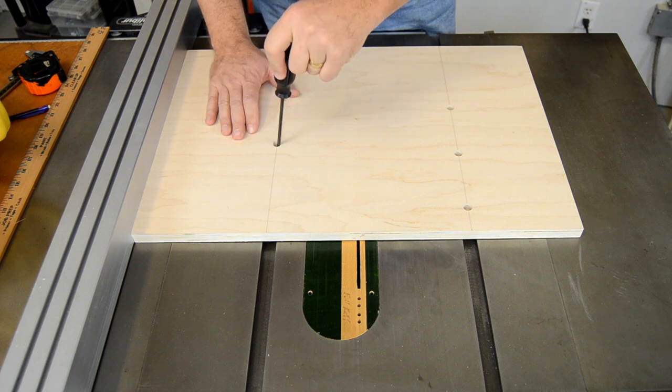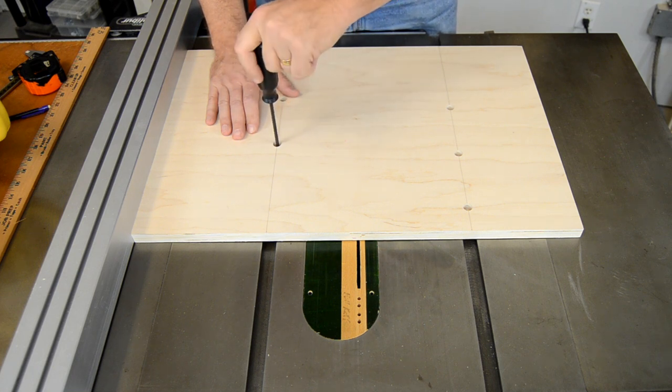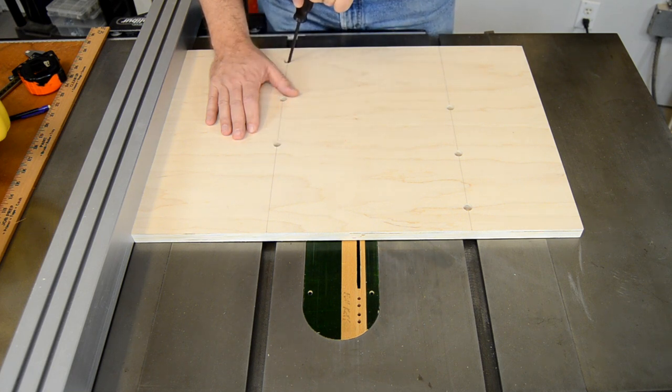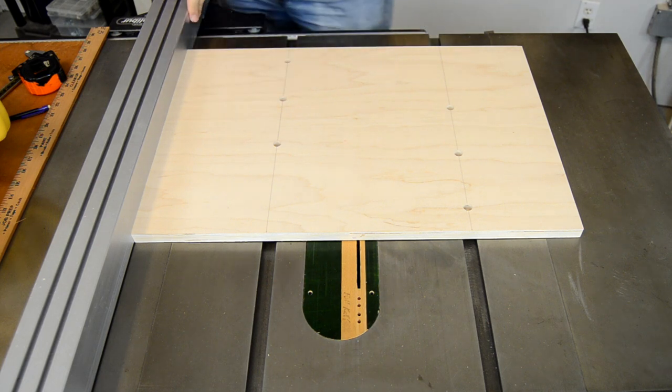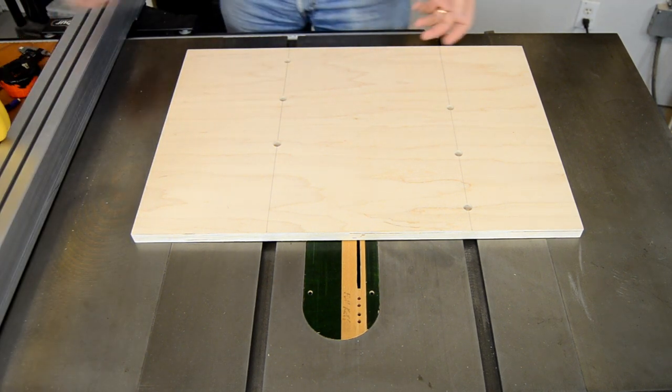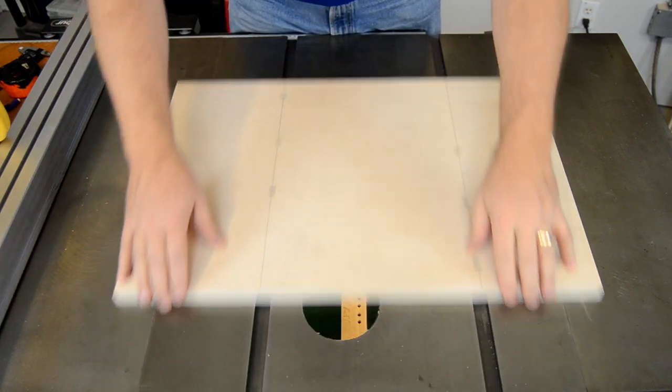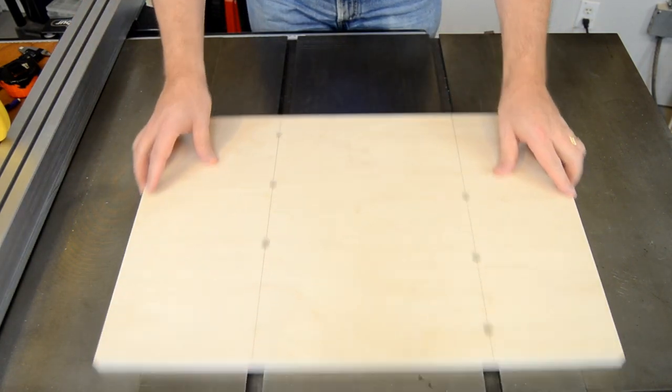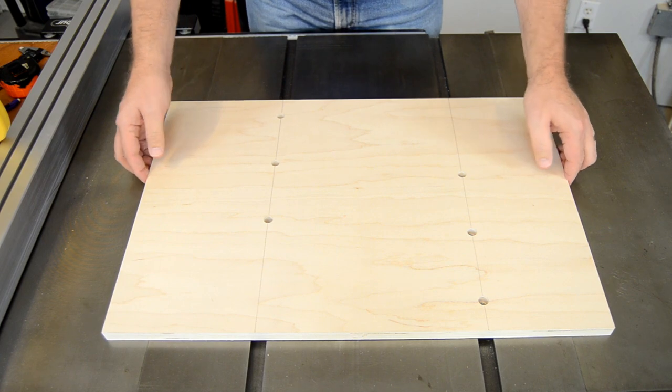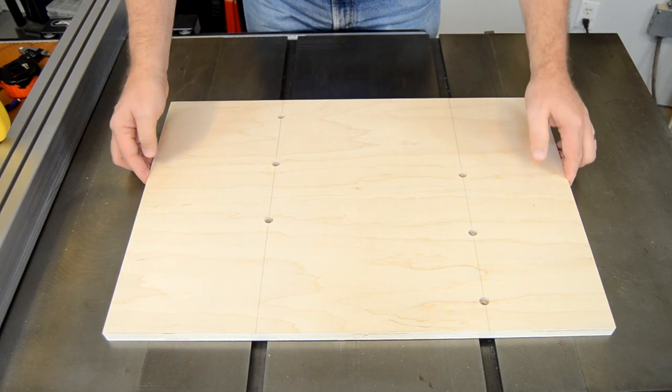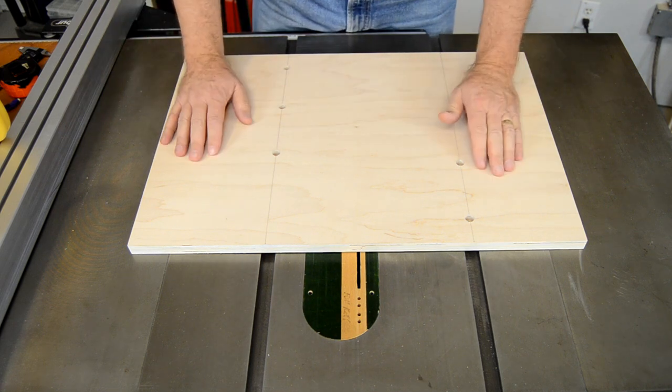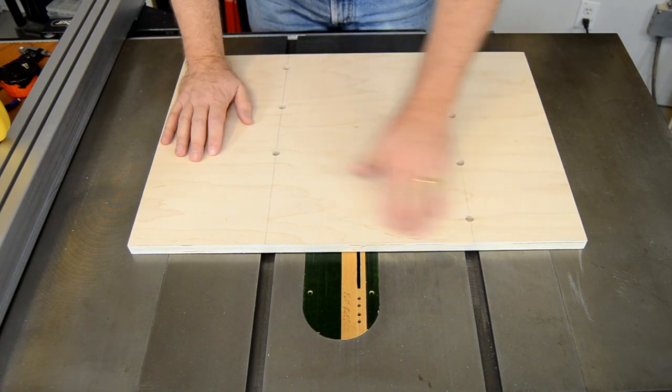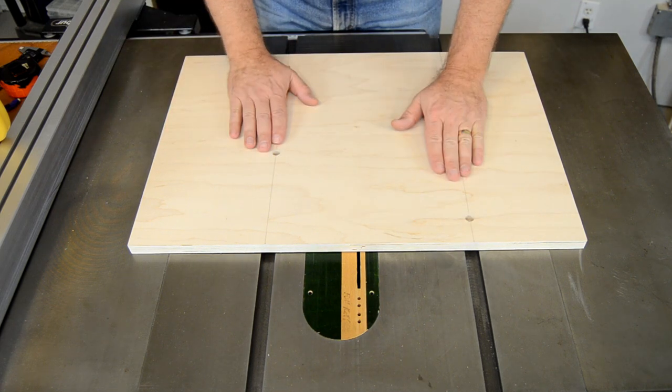Once these six screws are in place, everything should be set. The jig moves very smoothly back and forth—that's good. And there's zero play side to side. This is exactly what I want, and it was easy to do because of the play built into the system.